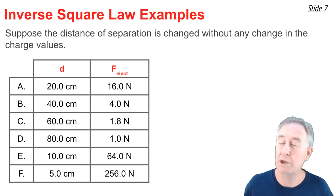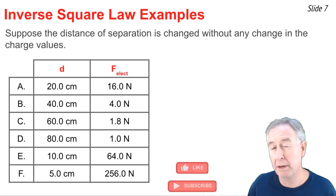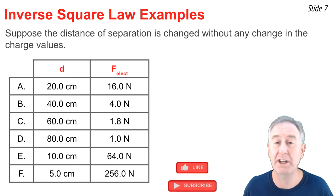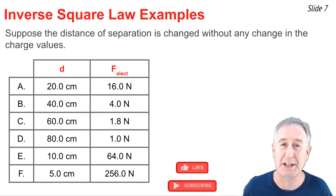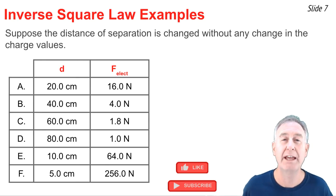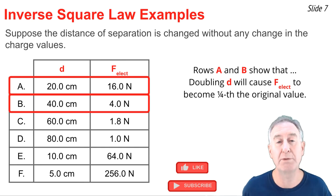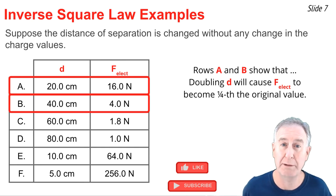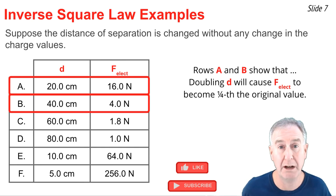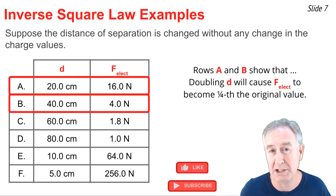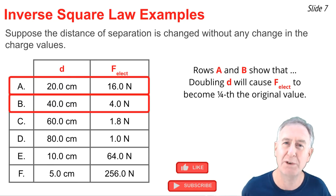Once more, we'll use a table of numerical values to illustrate the inverse-squared law relationship. If we look at rows A and B, the distance doubled from 20 to 40 centimeters, while the force has become one-fourth of the original value. It was 16 newtons, and now it's 4 newtons.